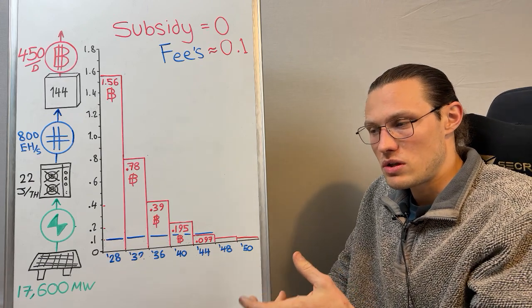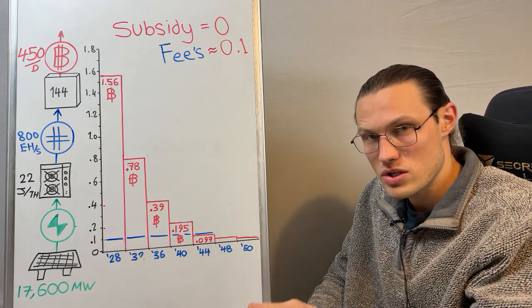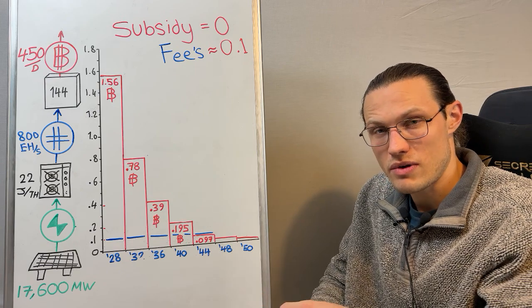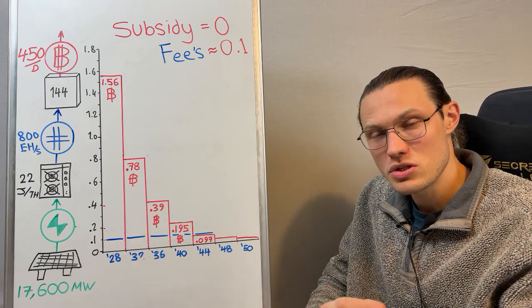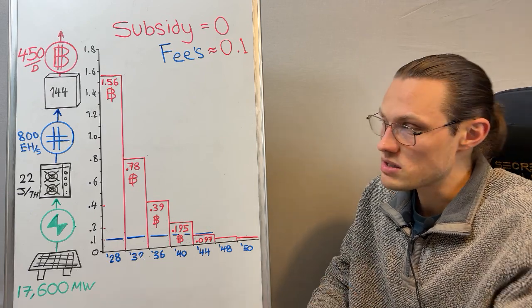And the amount of Bitcoin that you need to use to purchase that electricity, think of it the other way around, well that increases. So the halving event essentially doubles your purchasing power. We'll get into that later in the video.